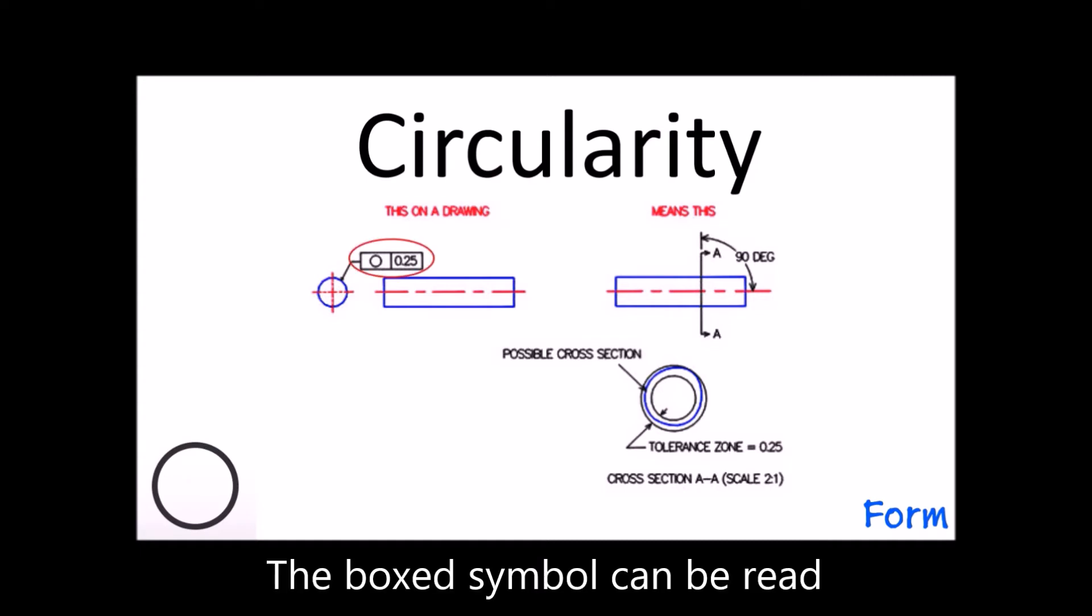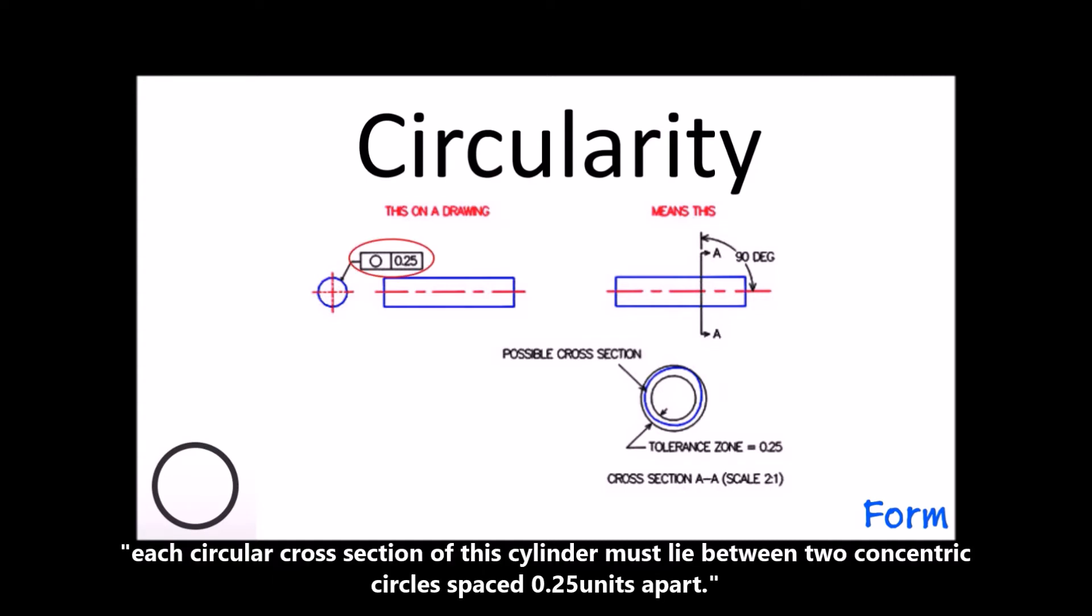The boxed symbol can be read: Each circular cross-section of this cylinder must lie between two concentric circles spaced 0.25 units apart.